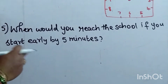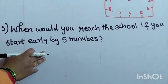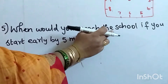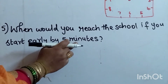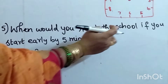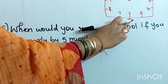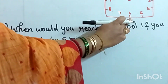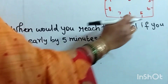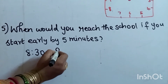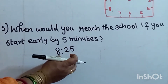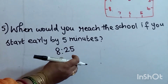If I start early by 5 minutes — my starting time is 8:30, so 5 minutes earlier means I start at 8:25. So my starting time will be 8:25.